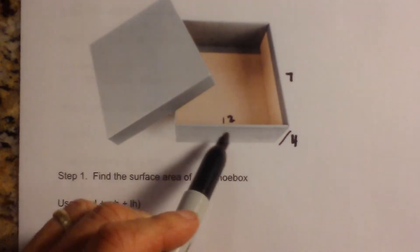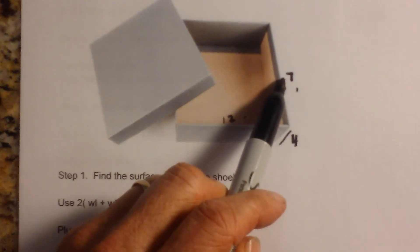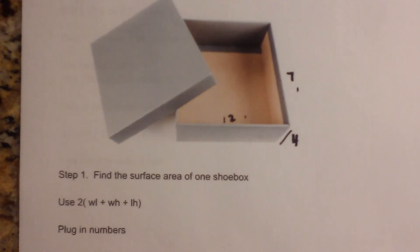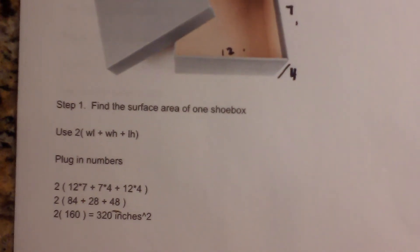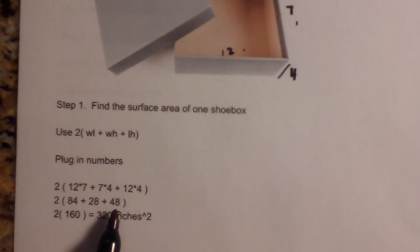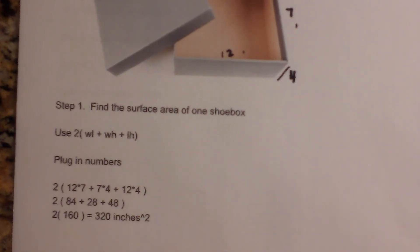So first we will go 12 by 7, which is width and length. And then we will go 7 by 4. And then we will go 12 by 4. And when you multiply all that, here is what we get: 12 times 7 is 84, 7 times 4 is 28, and 12 times 4 is 48. Now when we add in the parentheses — 84 plus 28 plus 48 — you get 160. And when you multiply that by 2, you get 320 inches squared.